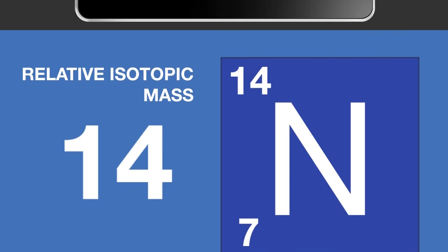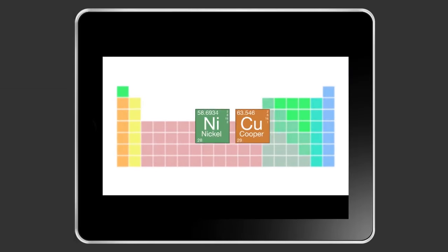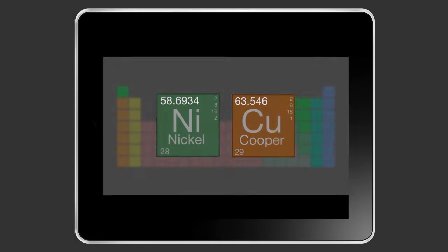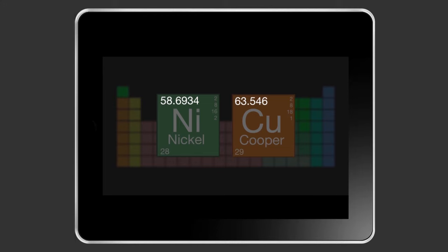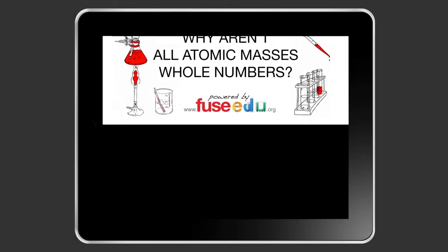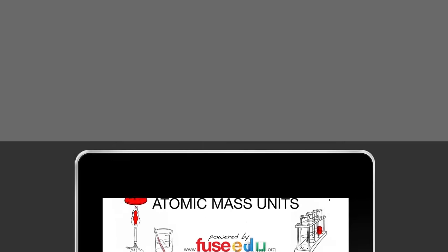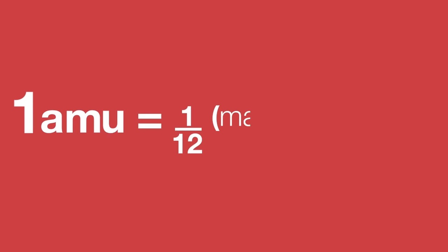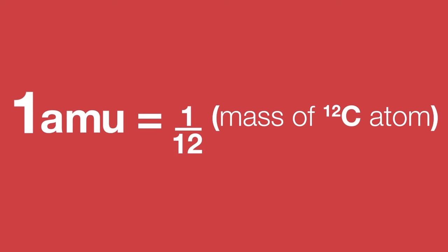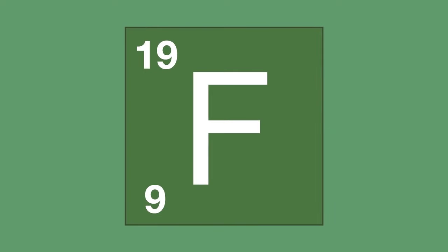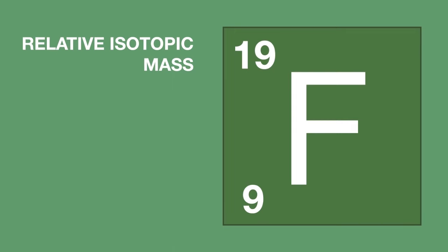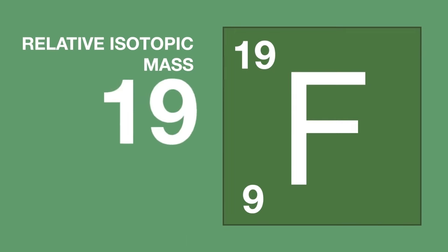And that's it. Now, some of you may have noticed that not all atomic masses on the periodic table are whole numbers. We'll be covering these in our lesson 'Why Aren't All Atomic Masses Whole Numbers?' But from this lesson, you need to remember: one atomic mass unit is one-twelfth of the mass of a carbon-12 atom, and we can use this to work out the relative mass of a particular atom.